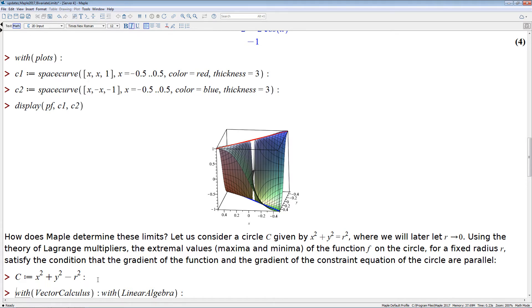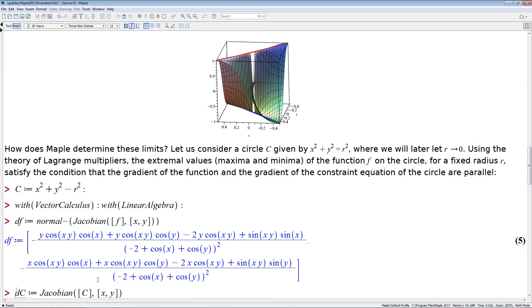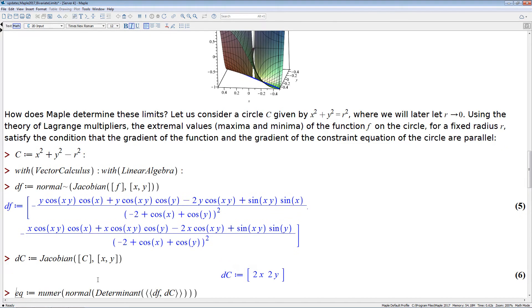So, okay, and so this is, we can compute this in Maple, so we have already defined the circle r. We take the gradient of our function f, that's given by this vector here, and we take the gradient of the constraint given by this vector. And then, if we want those to be parallel, then the determinant given by those two vectors has to vanish.